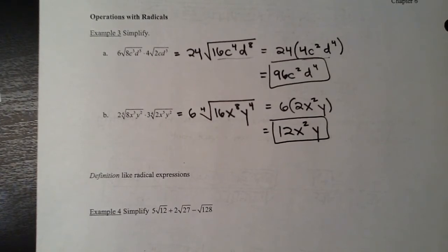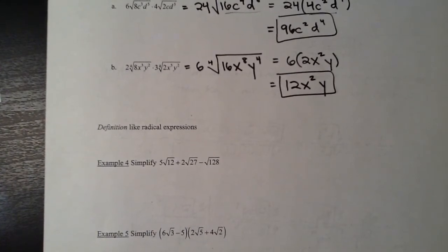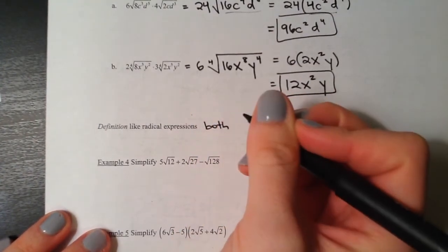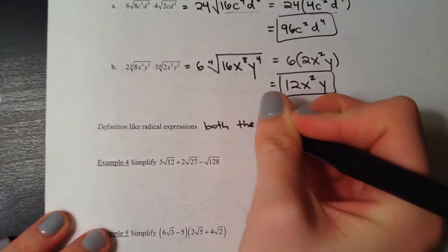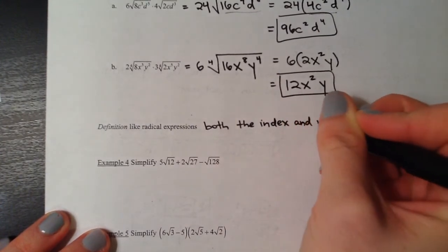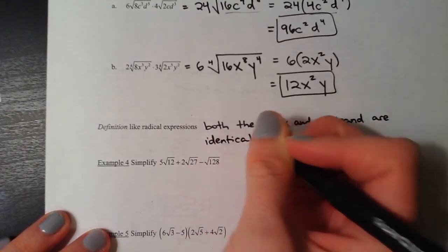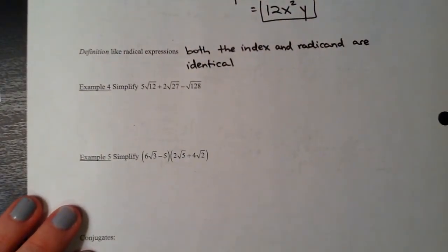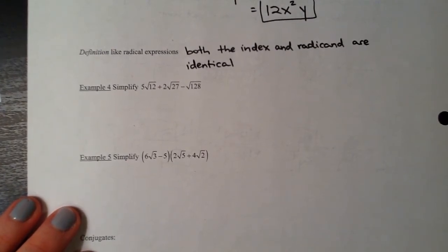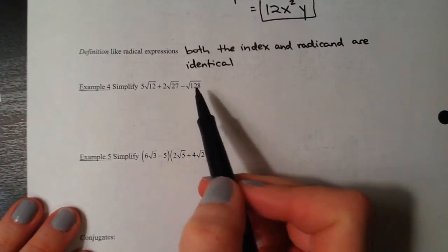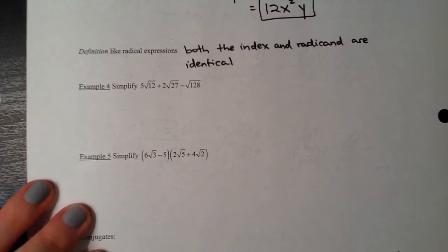For adding and subtracting we need to know about like radical expressions, which is very similar to like terms - you can only combine like radical expressions. They are like radical expressions if both the index and the radicand are identical. For example, the square root of 3 and the cube root of 3 are not like radicals because the index differs. The square root of 6 and the square root of 7 are not like radicals because the radicands differ.